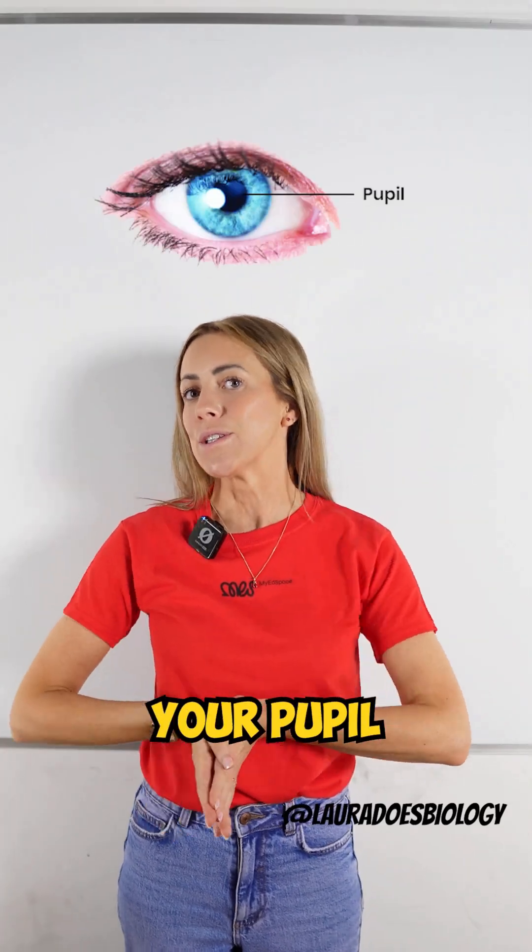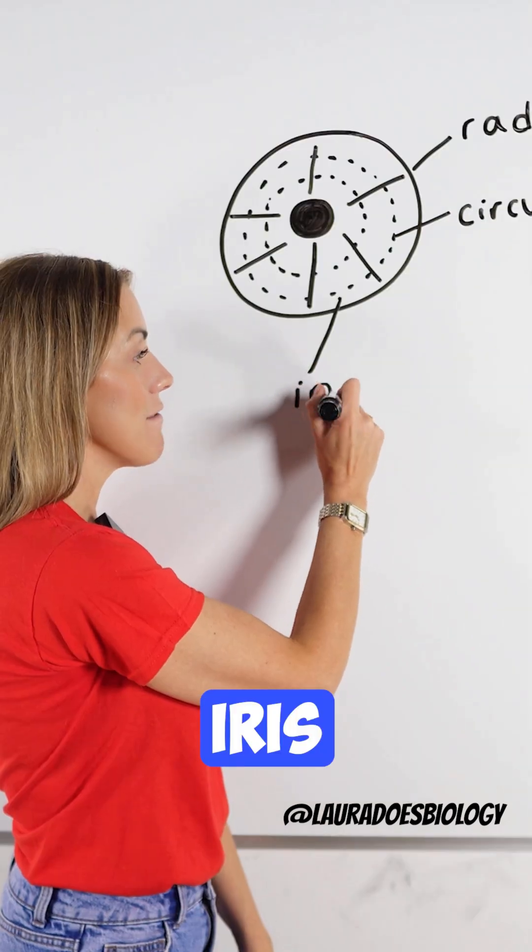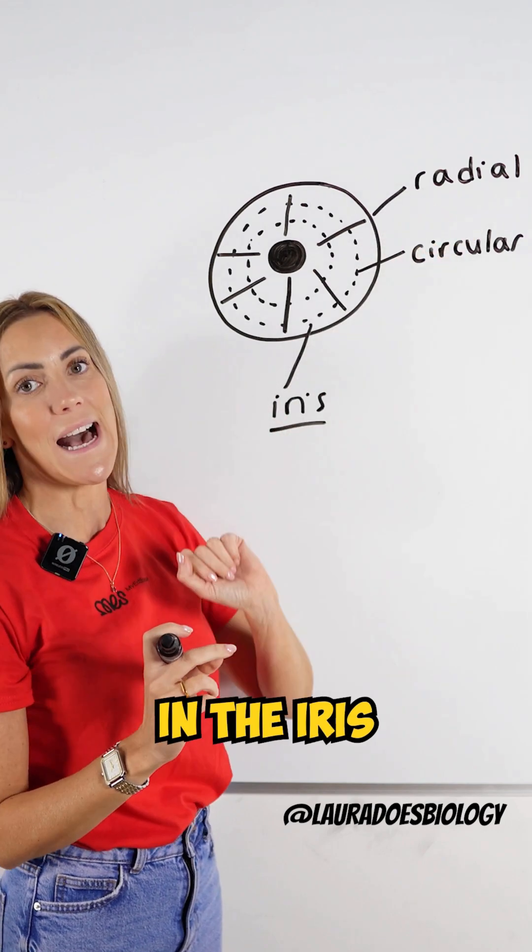How is the size of your pupil controlled? Pupil size is controlled by the iris, specifically the muscles in the iris.